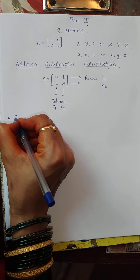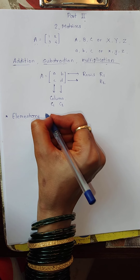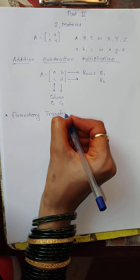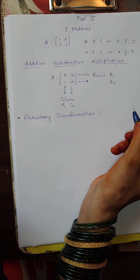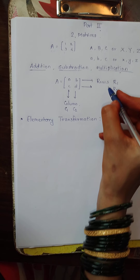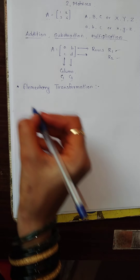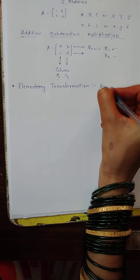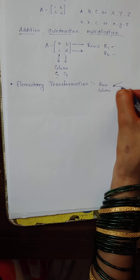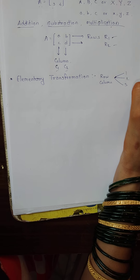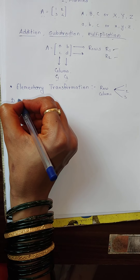The first point is elementary transformation. If you want to use the transformation, there are certain rules. The rows are rows and I will use the columns. I will use the transformation with rows and columns. There are 3 types of elementary transformations.